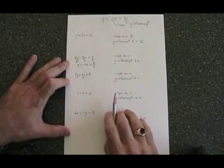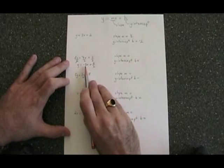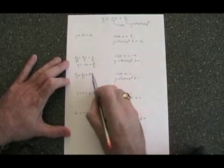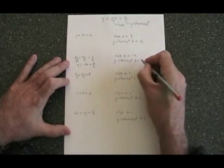Now we're in y equals mx plus b form, so m slope is equal to negative 2, and the b y-intercept is 3 halves.